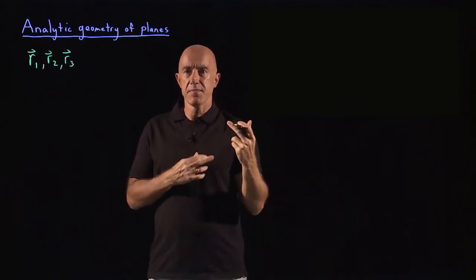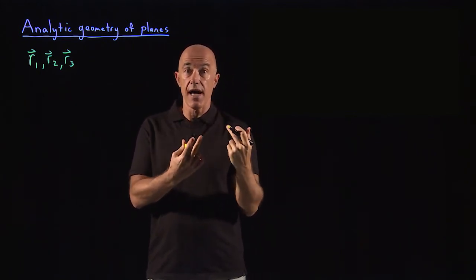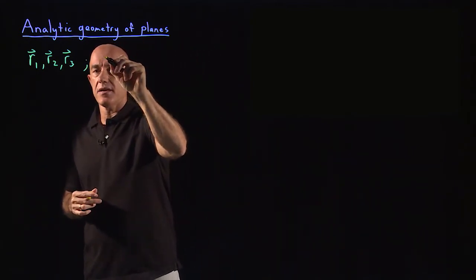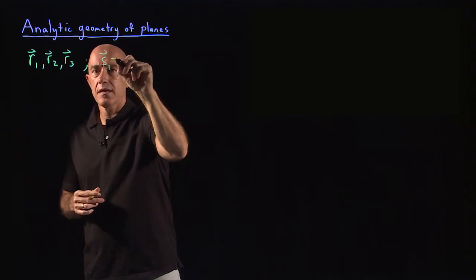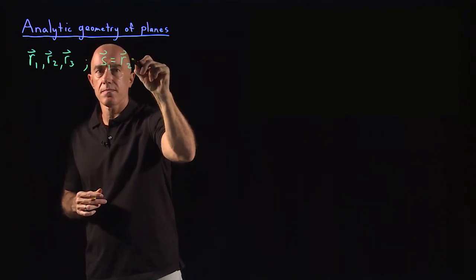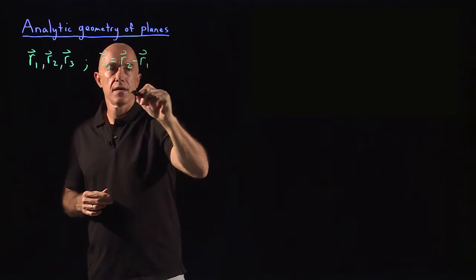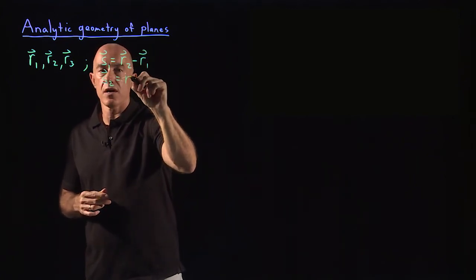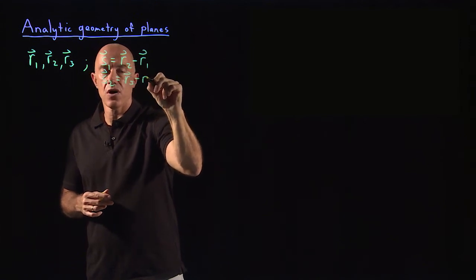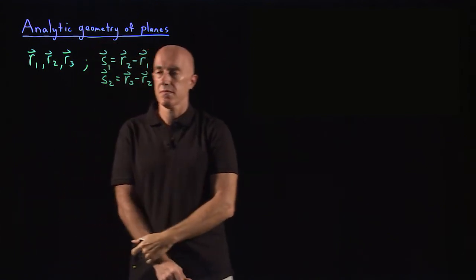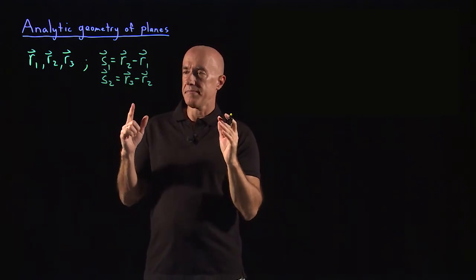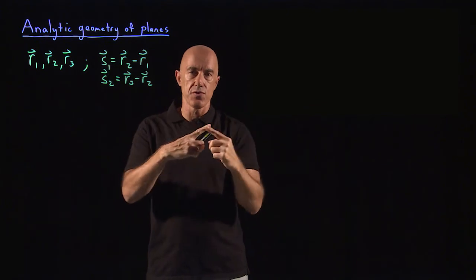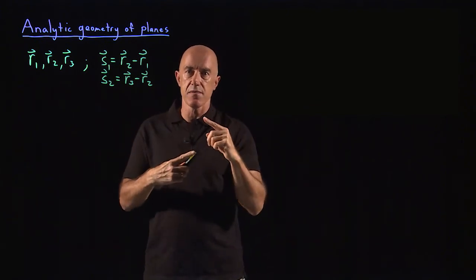The displacement vectors will lie in the plane. Those displacement vectors can be s1 equals r2 minus r1, and s2 equals r3 minus r2. So from the three position vectors, we now have two displacement vectors that lie in the plane.